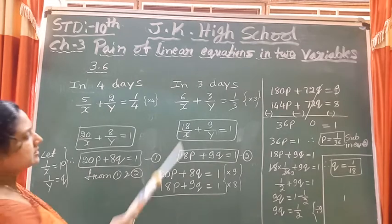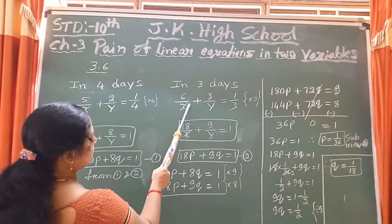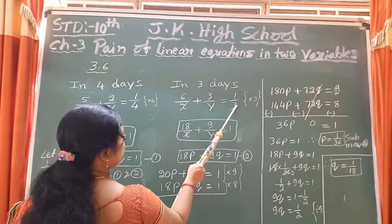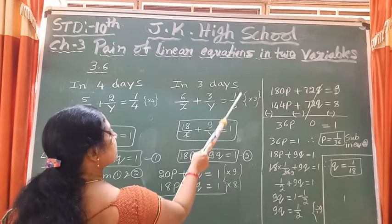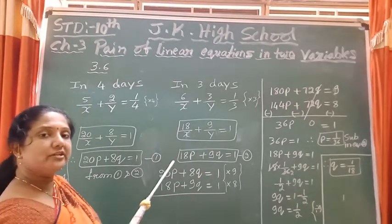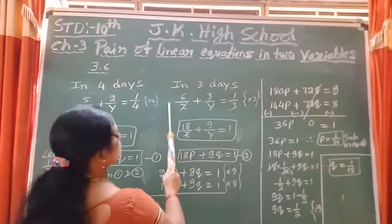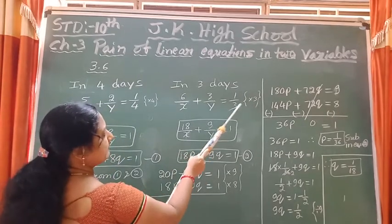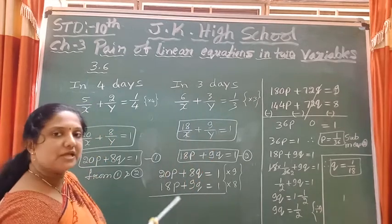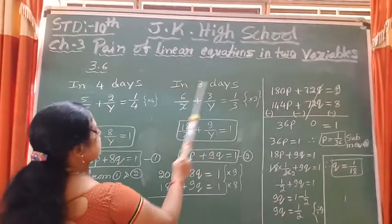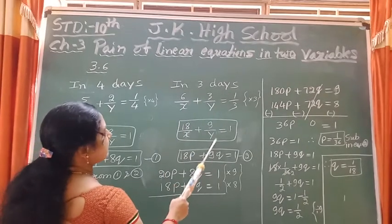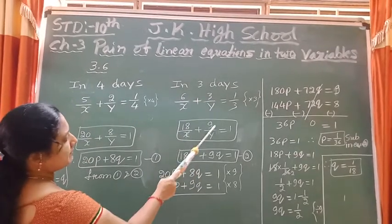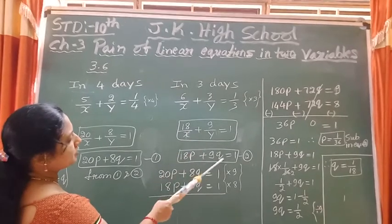Similarly, 6 men and 3 women complete the work in 3 days. Multiplying through by 3 gives: 18/x plus 9/y equals 1. Substituting p for 1/x and q for 1/y, this becomes 18p plus 9q equals 1. So now we have two standard linear equations in two variables p and q.